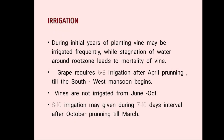During initial years of planting, vines should be irrigated frequently, avoiding stagnation of water around the root zone. Grape requires six to eight irrigations after April pruning until the southwest monsoon begins. Vines are not irrigated from June to October. Grape requires eight to ten irrigations at intervals of seven to ten days after October pruning till March. Drip irrigation is the most commonly used method.